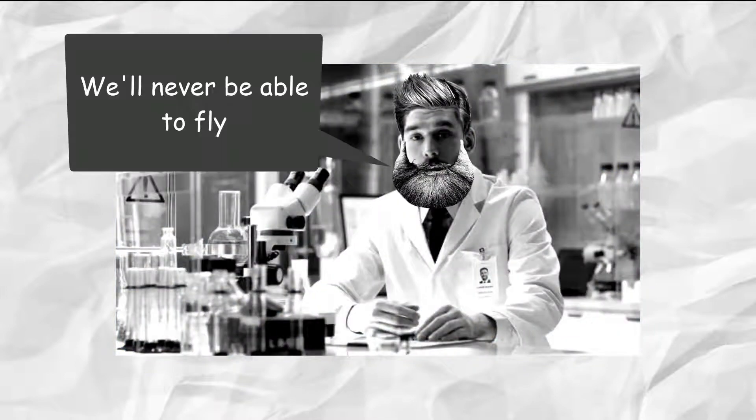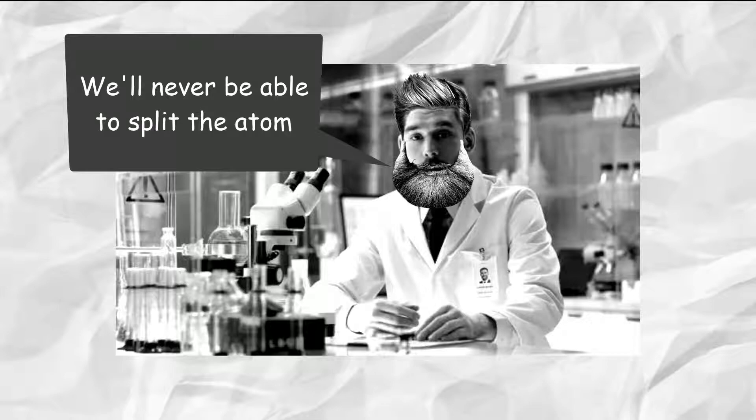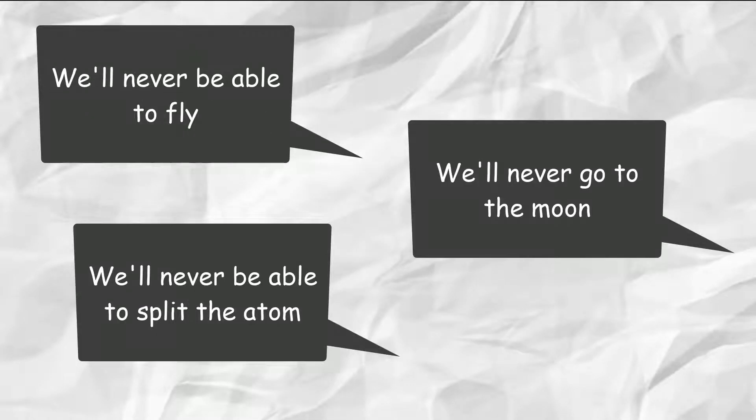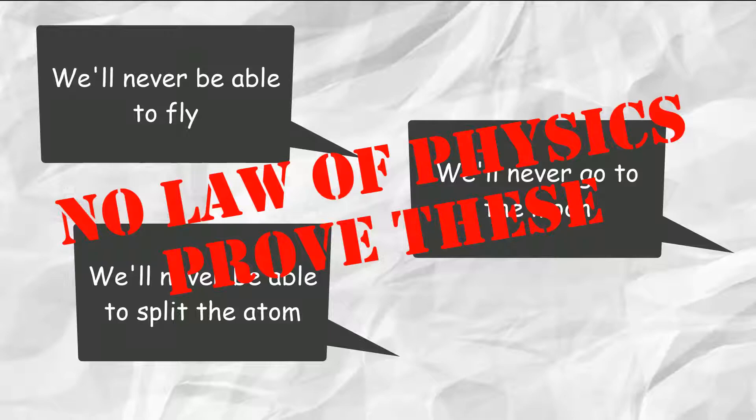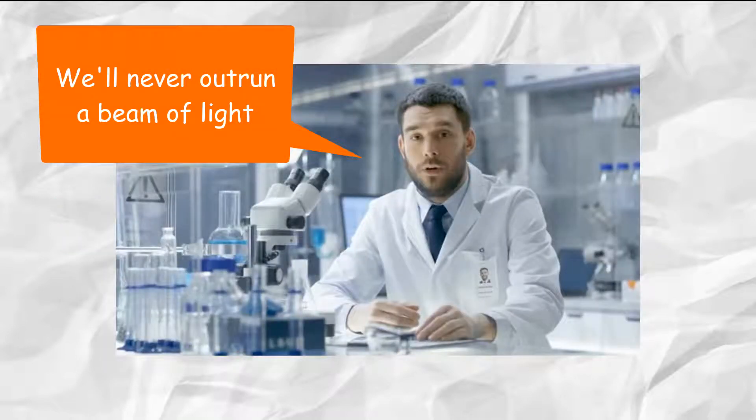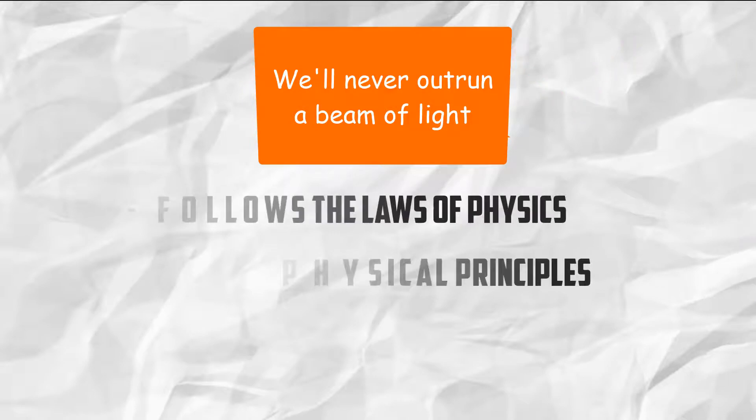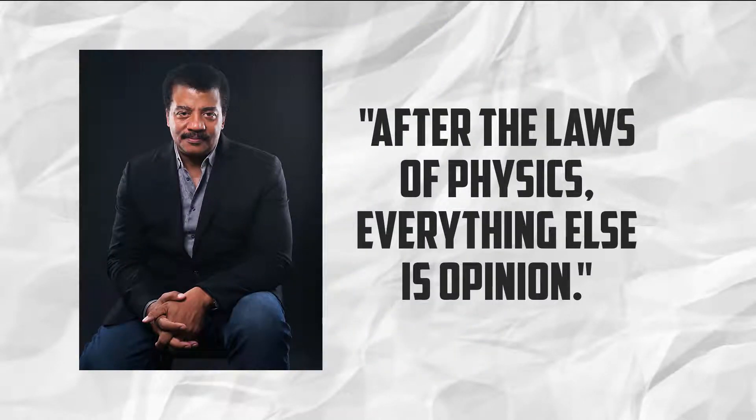People in the past used to say, we'll never be able to fly, or we'll never be able to split the atom, or even we'll never go to the moon. These were believable quotes until they were proven wrong, but what they had in common was that none of those quotes had the laws of physics that stood before them. This is why saying something like we'll never be able to outrun a beam of light is different. It follows the laws of physics and physical principles. As Neil said, after the laws of physics, everything else is opinion.